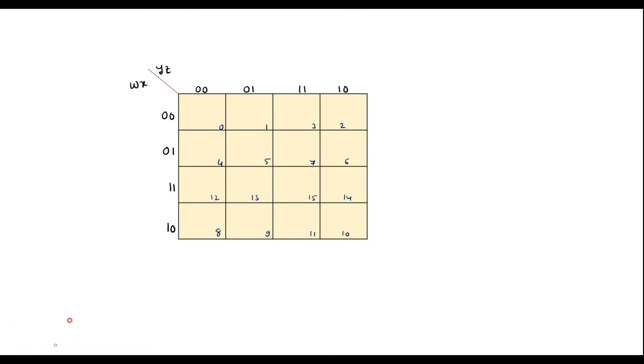So with respect to max terms, this 0, 0 is nothing but y plus z. This will be y plus z bar. This is y bar plus z bar. And here it is y bar plus z. Similarly, this will be w plus x, w plus x bar. This is w bar plus x bar. This will be w bar plus x.